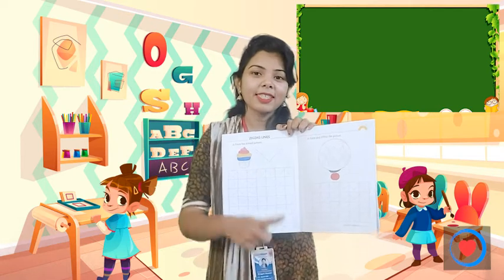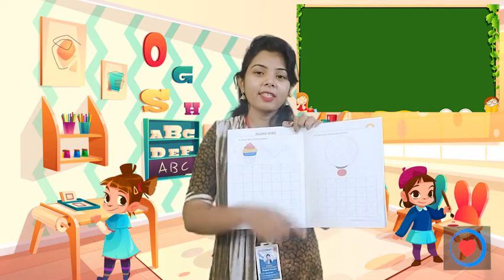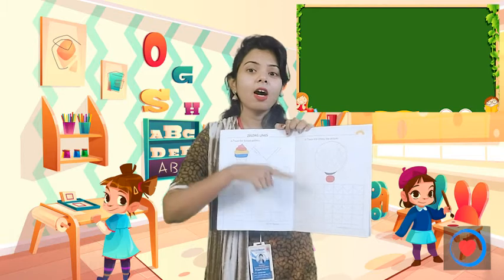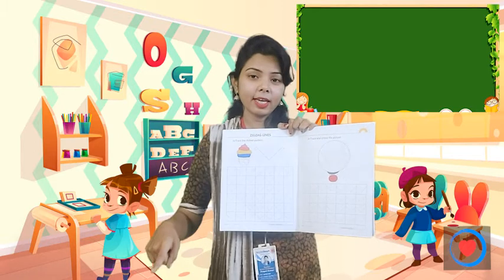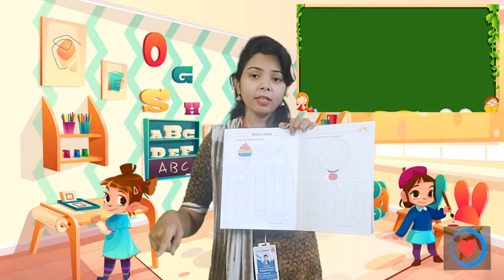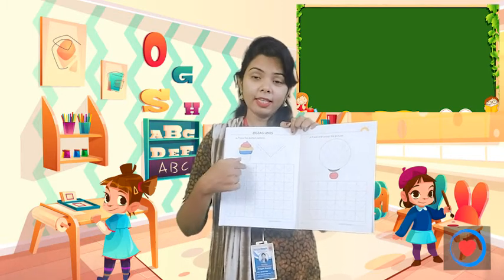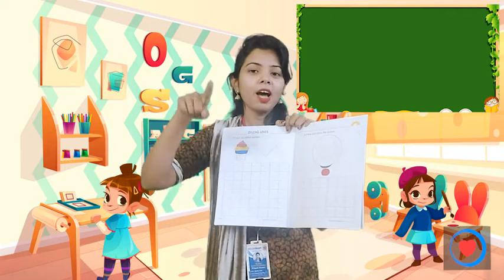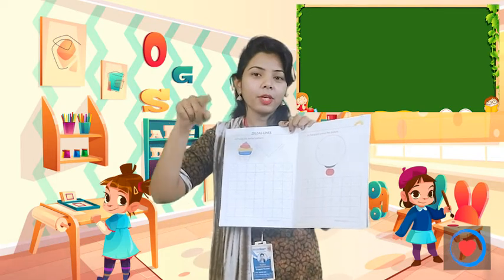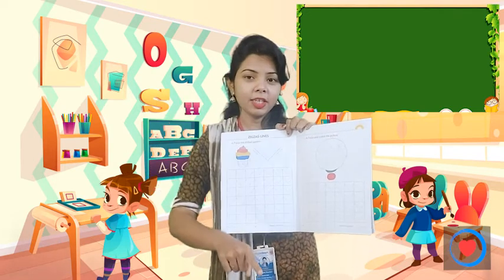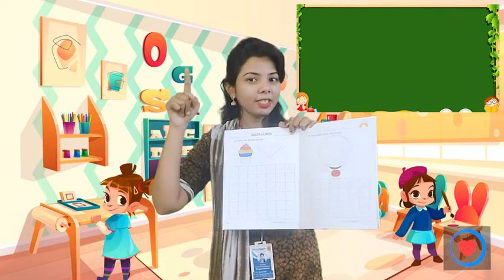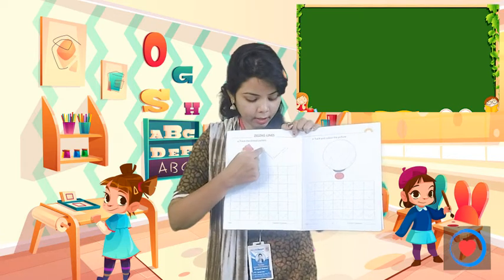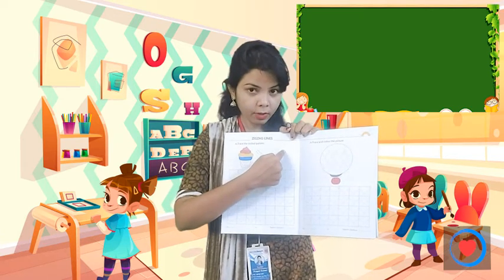Down zigzag line — first we have to do it. Up zigzag line — next we have to do it. Down to up. Niche se upar jana hai aapko. Okay? See? Down to up.